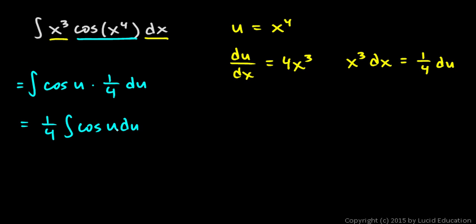And integrating the cosine function should be easy. That's just the sine function. So this is 1 fourth of the sine of u plus c. And u, remember, is x to the fourth. So this is 1 fourth sine of x to the fourth plus c.